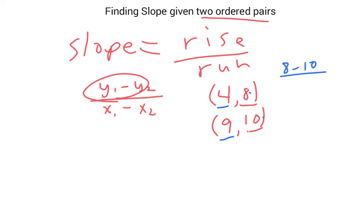Now it's important that since I took this first and put it here, I have to take this one, the 4, and subtract 9 from it. You say I'm going to be working with negative numbers when I do this. So that will equal negative 2 over negative 5, which gives me a positive 2 over 5, because when you divide two negatives you get a positive number.